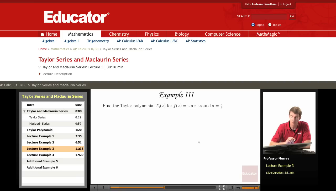Example 3 is to find the Taylor polynomial T4 for sine x, and this time we're not centering it around 0. We're centering it around a equals π/3. So it's not a Maclaurin series this time, it's a full-blown Taylor series.